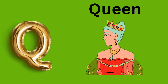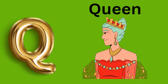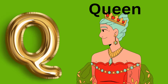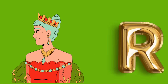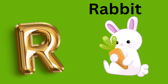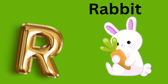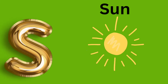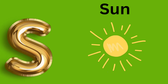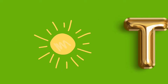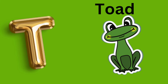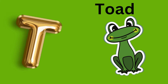Q is for Queen, Q, Q, queen. R is for Rabbit, R, R, rabbit. S is for Sun, S, S, sun. T is for Toad, T, T, toad.